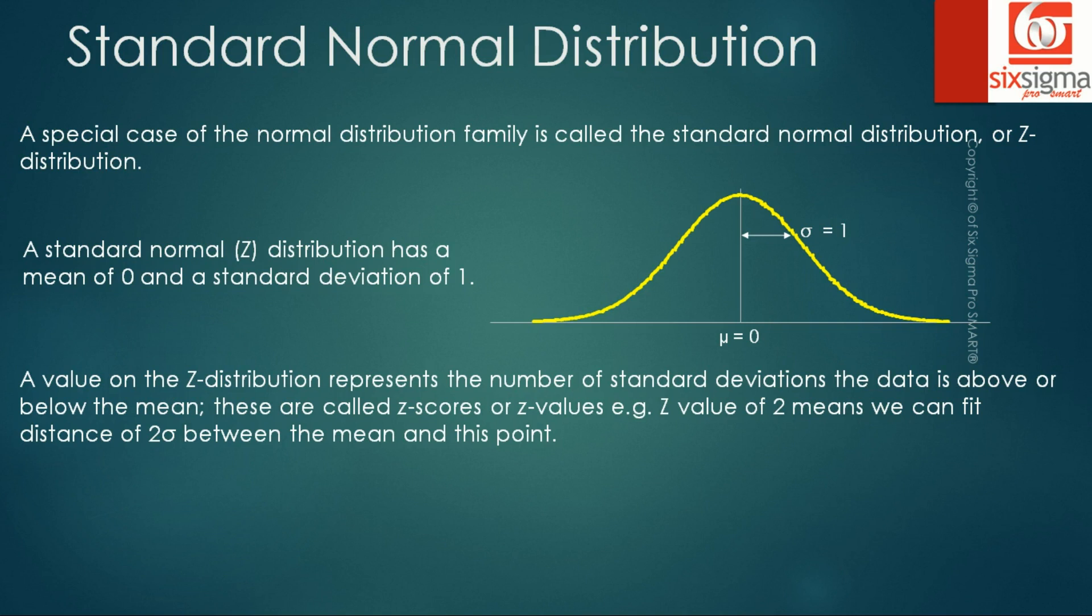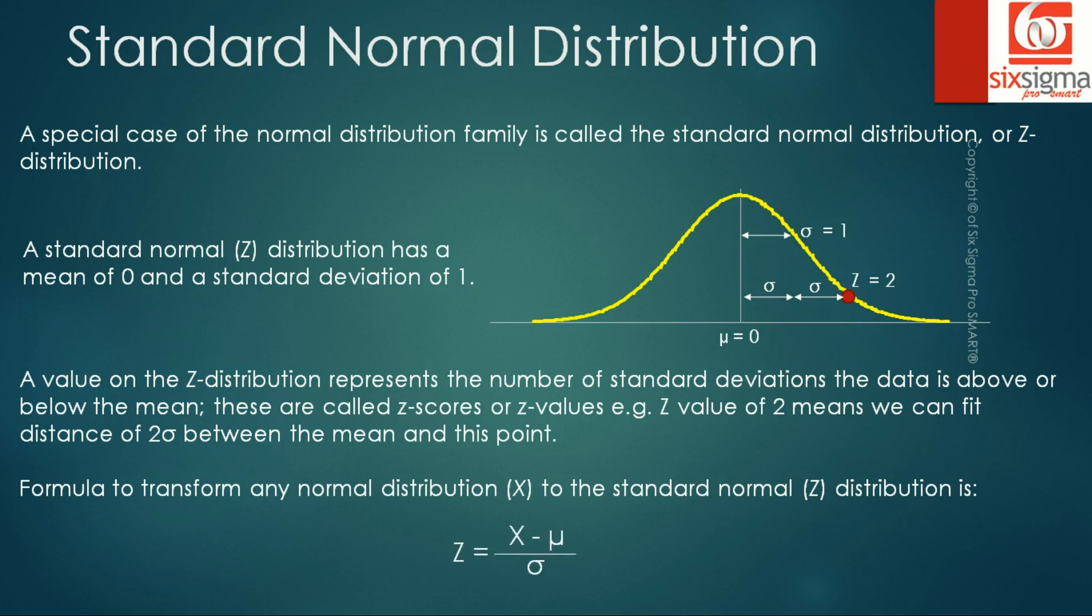A value on the Z distribution represents the number of standard deviations that data is above or below the mean. These are called Z scores or Z values. For example, Z value of 2 means we can fit distance of two standard deviations between the mean and this point. If you see it visually, say this is a Z value of 2. If you notice the picture, we can fit two standard deviations, and that is why it is called a Z value of 2. So it's nothing but the number of standard deviations that can be fit between a particular point and the mean. Formula to transform any normal distribution X to the standard normal distribution or Z distribution is Z equals X minus μ divided by σ. If you notice what we are doing here in the numerator, we are just taking the horizontal distance between a particular point and the mean, and what we are dividing it by is the standard deviation.